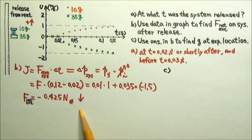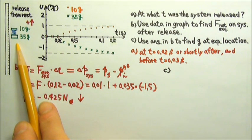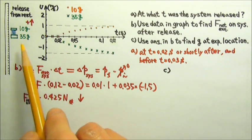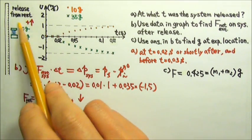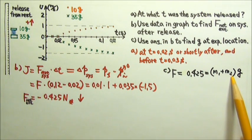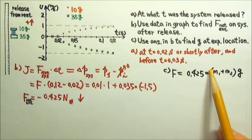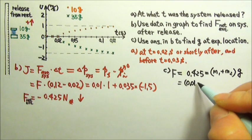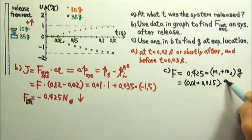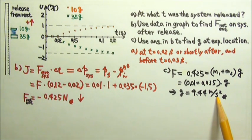In Part C, we're supposed to use this answer to find the acceleration due to gravity. When the system is in free fall, the net external force on the system is the gravitational force. So this should be mg of the whole system: net external force = m times g, where m is the mass of both blocks added together. Plugging in: 0.01 plus 0.035 times g equals 0.425, so g at the location of the experiment is 9.44 meters per second squared.